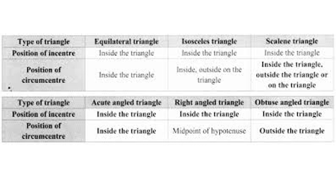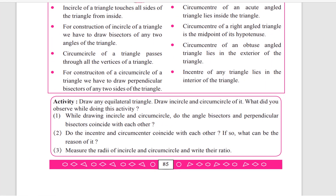Now coming to the position of the circumcenter: for an equilateral triangle, it will be inside the triangle. For an isosceles triangle, it can be inside, outside, or on the triangle. For a scalene triangle, it can also be inside, outside, or on the triangle. For an acute angle triangle, the circumcenter will be inside the triangle. For a right angle triangle, the circumcenter will be the midpoint of the hypotenuse. For an obtuse angle triangle, the circumcenter will be outside the triangle.